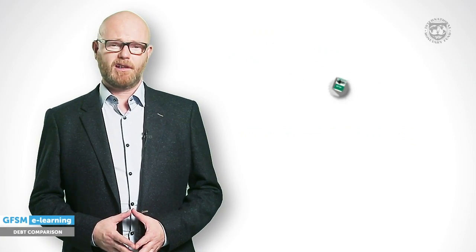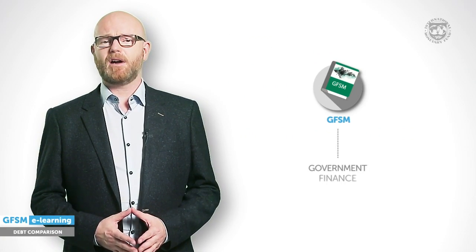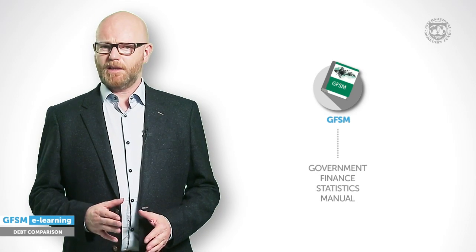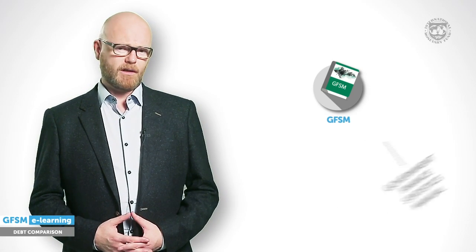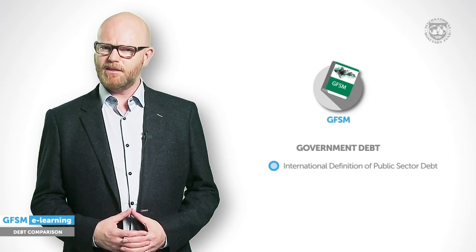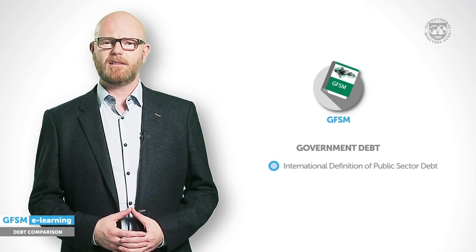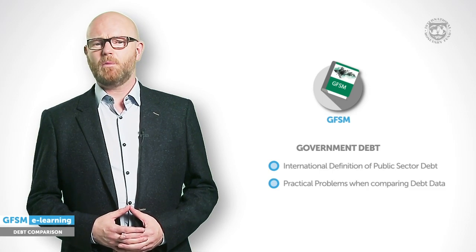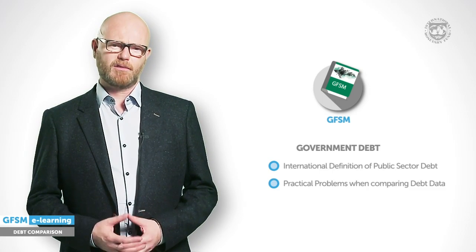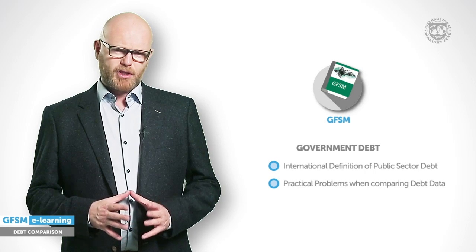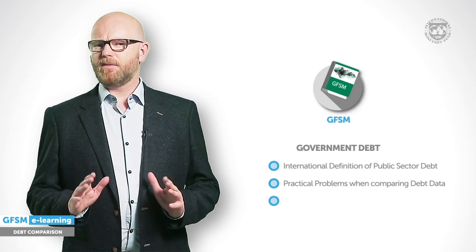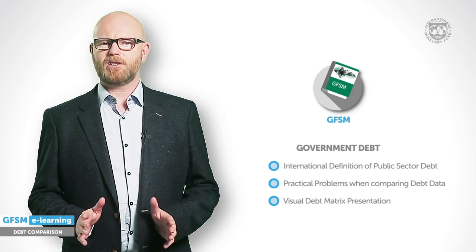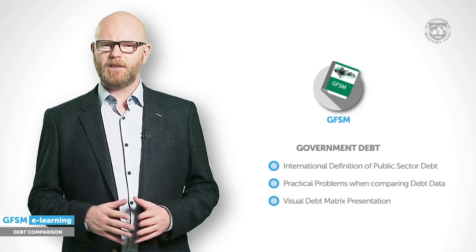Welcome back to another episode of the e-learning series on GFSM, the Government Finance Statistics Manual. In this episode I will talk about government debt. I will introduce the internationally harmonised statistical definition of public sector debt and explain some practical problems when comparing debt data across countries. I will show an approach explained in a visual debt matrix presentation that improves debt comparability.